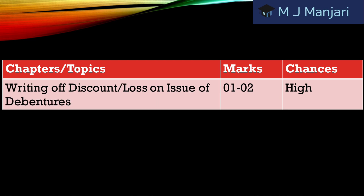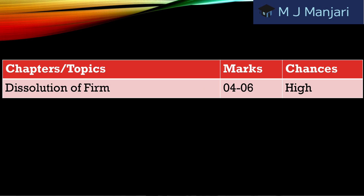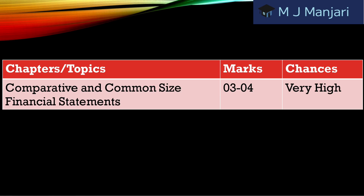Next, writing off discount and loss on issue of debentures. It carries 1 to 2 marks and chances are high. Next, dissolution of firm. It carries 4 to 6 marks and chances are high. And lastly, comparative and common size financial statements. It carries 3 to 4 marks and chances are very high.